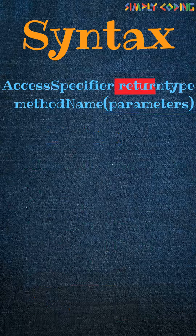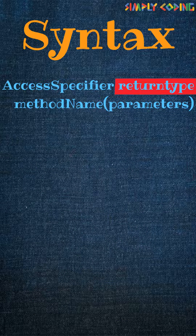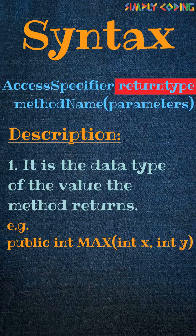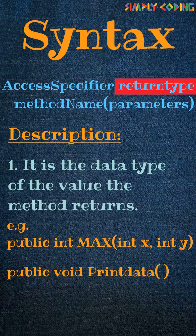Next is the return type, which specifies the data type of the value the function returns. For example, a max or min function would return the maximum or minimum value compared between the two parameters that were passed. If the function does not return any value, it should be void — for example, methods which are called for printing or just doing some processing and do not return anything.